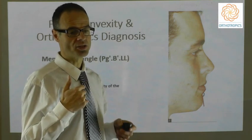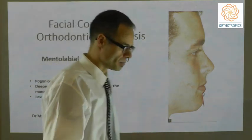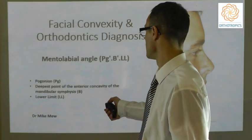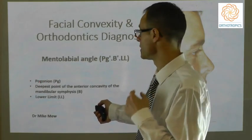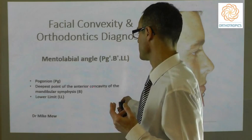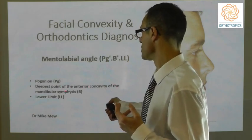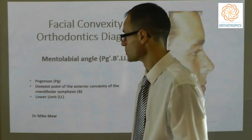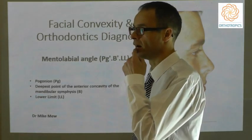This is trying to gain some assessment of the size of it. To do this we look at pogonion, which is on the front tip of the chin. We look at the deepest point of the anterior concavity of the mandibular symphysis, which is just basically the bottom of the fold, and at the lower limit of the lower lip.